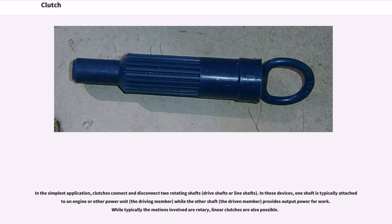In the simplest application, clutches connect and disconnect two rotating shafts, drive shafts or line shafts. In these devices, one shaft is typically attached to an engine or other power unit, the driving member, while the other shaft, the driven member, provides output power for work. While typically the motions involve rotation, linear clutches are also possible.